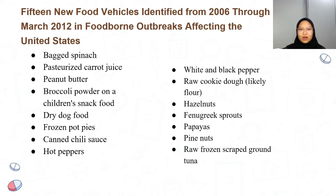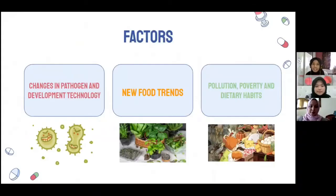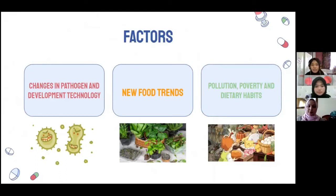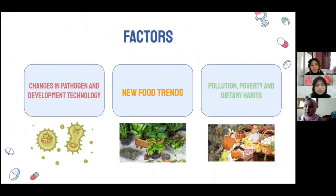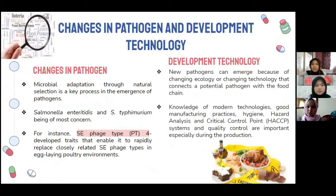What causes this phenomenon to occur? My name is Nasuha, and together with Anissa and Aisha, we will present the factors that contribute to new and emerging foodborne pathogens. I will cover changes in pathogens and development technology. Changes in pathogens occur through microbial adaptations via natural selection, which is a key process in the emergence of pathogens. Microbes have an advantage in adaptation, such as resistance to heat and acidity in unfavorable conditions, which helps them emerge and distribute widely.